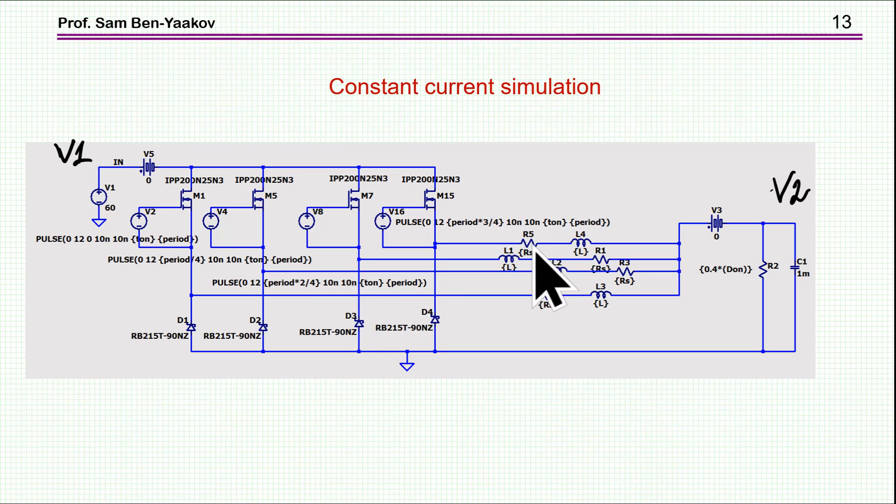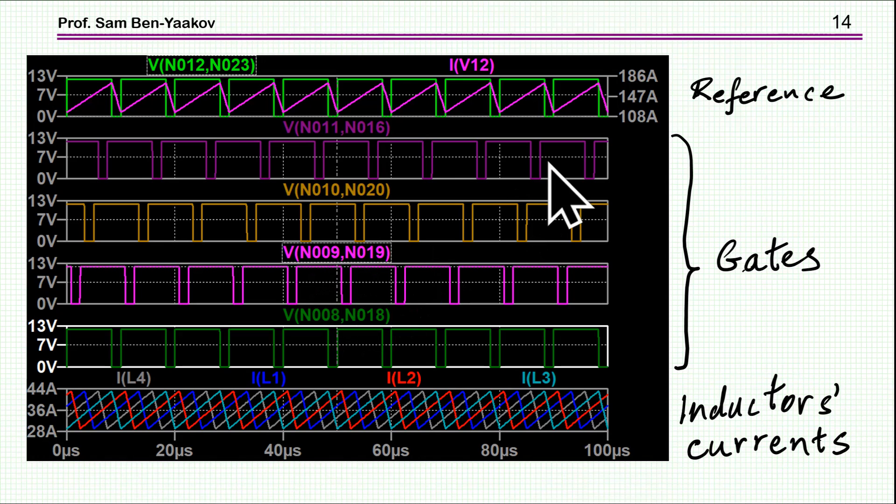And then we have the four inductors and they are interleaved. And here we see some waveforms. This is for say one inductor. This will be the ripple here. Fairly high ripple here.